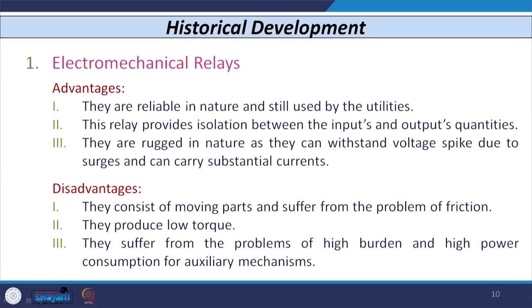However, electromechanical relays have certain disadvantages. First, they consist of several moving parts and suffer from friction. Second, they produce very low torque for certain types of faults — for example, if a triple line-to-ground fault occurs, this relay may produce low torque and sometimes may not operate. Third, they suffer from a very high burden problem — their circuitry consumes roughly 60 to 80 watts of power. Such relays are nowadays not preferred by utilities.